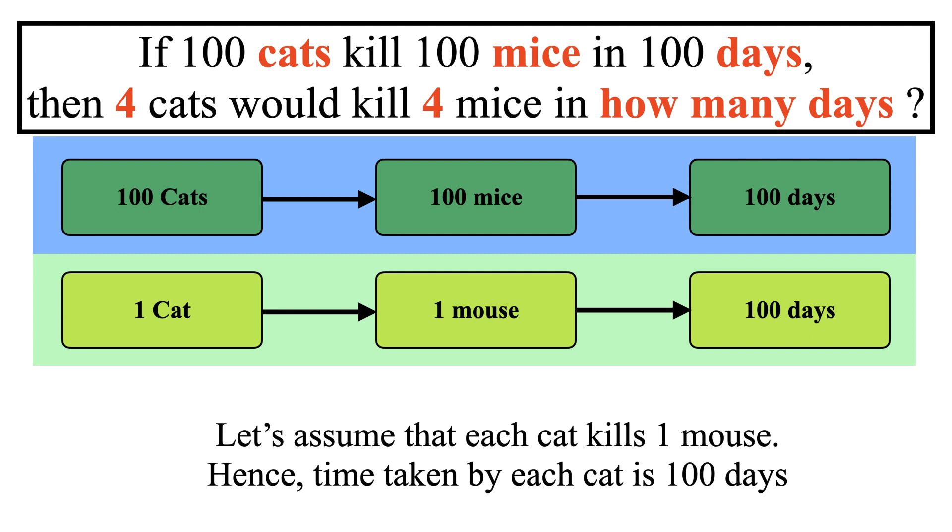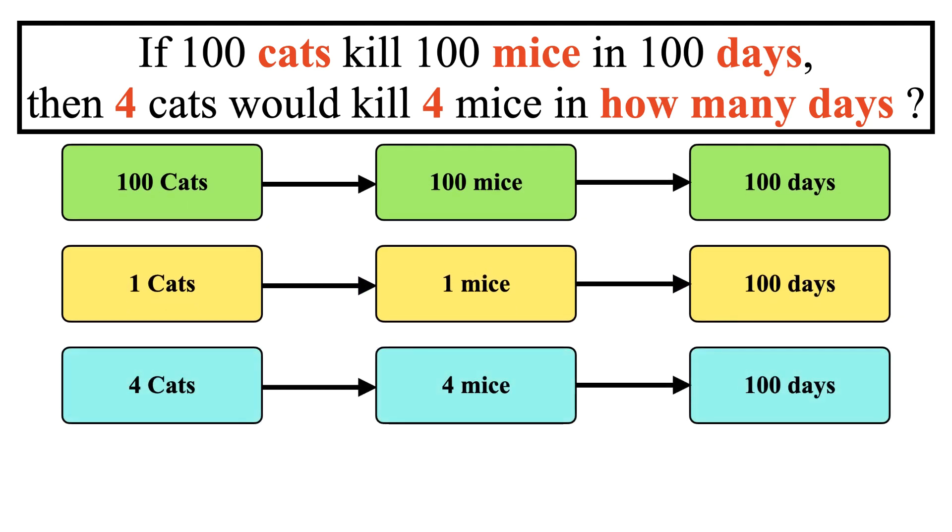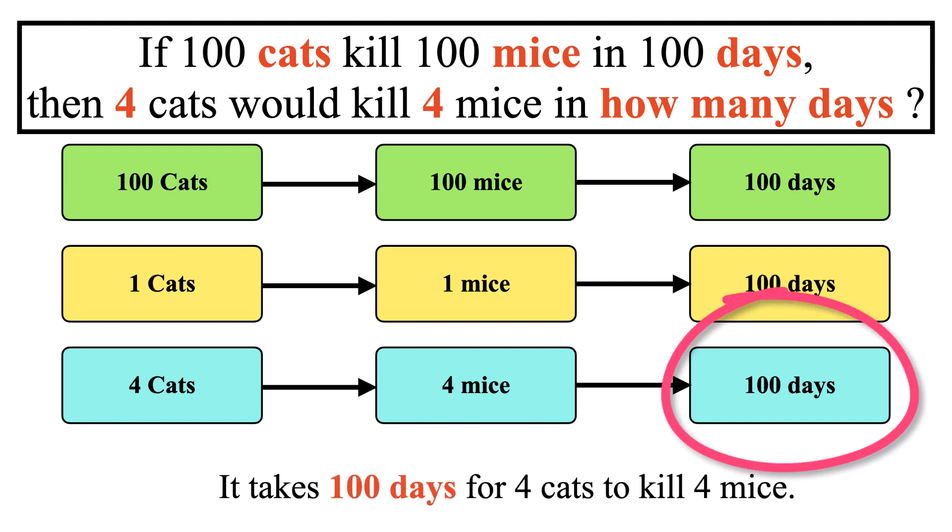If this takes 100 days, then that's how long it takes for one cat to kill one mouse. Thus, it takes 100 days for four cats to kill four mice.